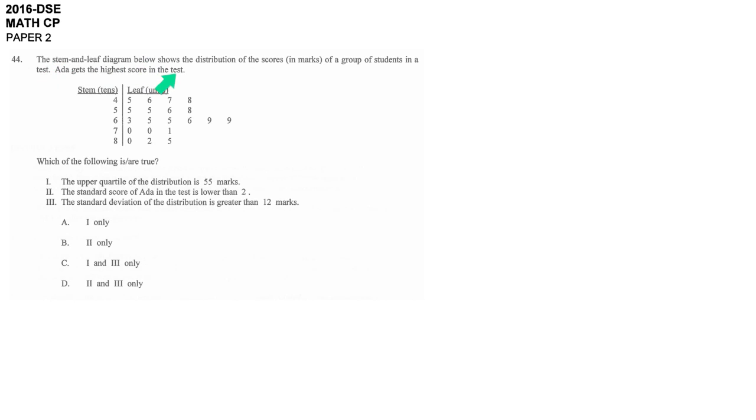In our stem and leaf diagram, there is some data and the first statement asks you about the upper quartile. So we need to know the exact order of this. That's why we need to calculate the total number of data first.